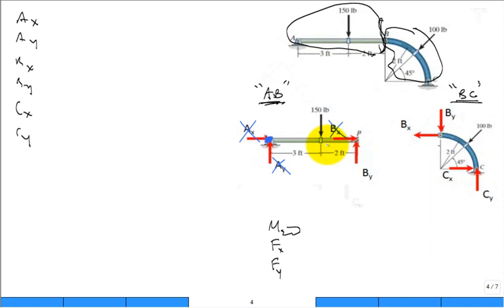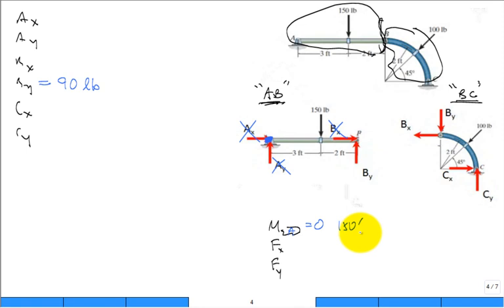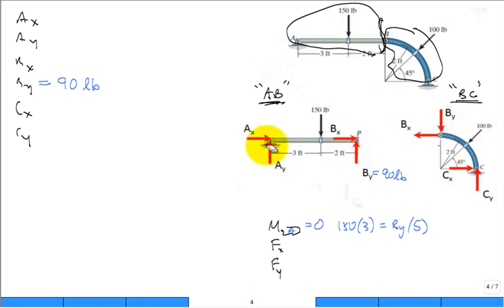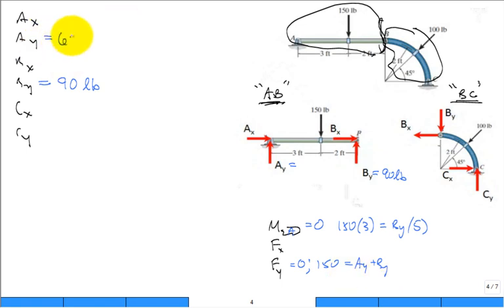Taking the sum of moments about A equals zero: 150 pounds clockwise at a 3-foot moment arm must equal BY times a 5-foot moment arm counterclockwise. Solving gives BY = 90 pounds. Then the sum of forces in Y: 150 down equals AY up plus BY up, so AY = 60 pounds.